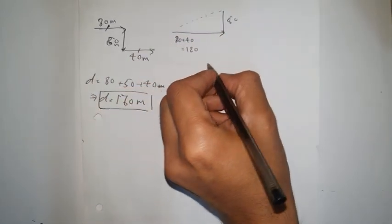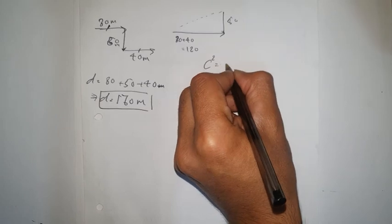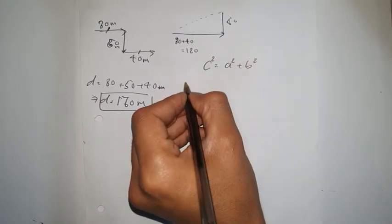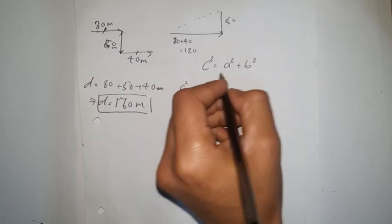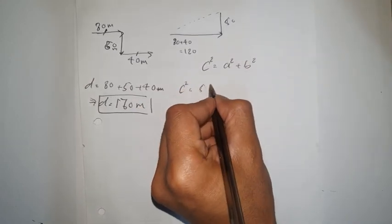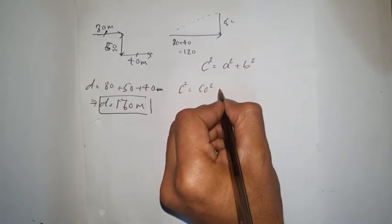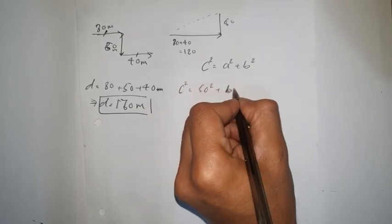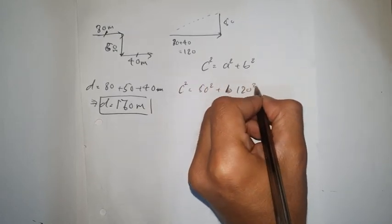Using the Pythagorean theorem: c squared equals a squared plus b squared. For a we put 50 squared, and for b we put 120 squared.